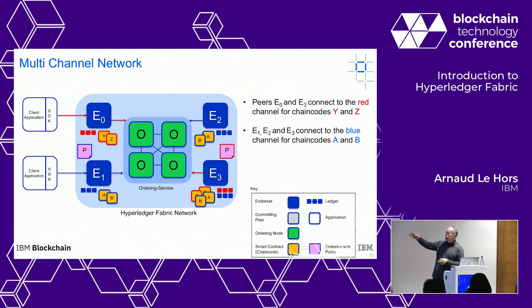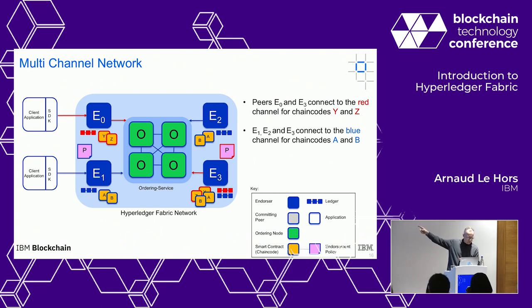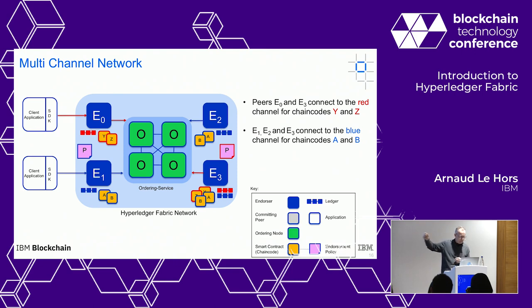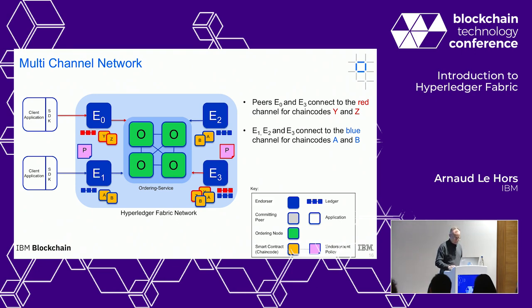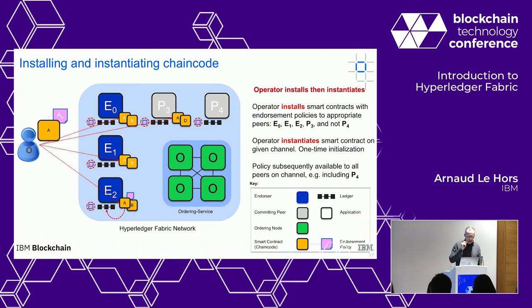Here's an example of a network with multiple channels, represented by colors. E0 is on the red channel; E1 and E2 are on the blue channel; E3 is on both. Smart contracts — chaincode — are associated with channels, and you can mix and match, but the key point is you can isolate the transaction visibility of each peer from one another.